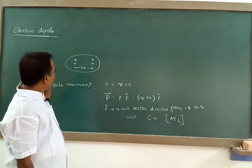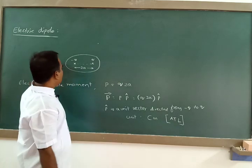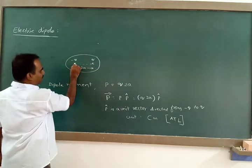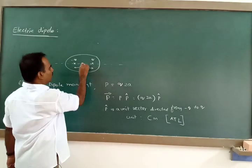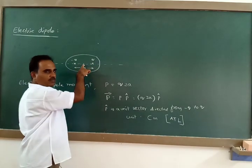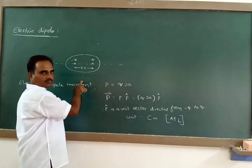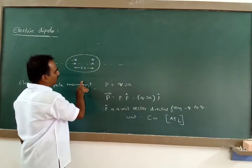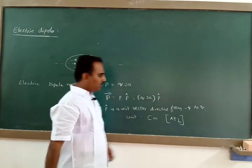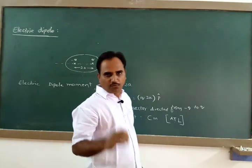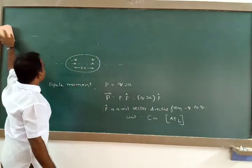We can find the electric intensity due to a dipole first on an axis. A line passing through the two charges is called the axis of the dipole. The midpoint of the two charges is called the center of the dipole. A line passing through the center and perpendicular to the axis is called the equatorial line. We shall find electric intensity on the axis and then on the equatorial line. These derivations are very important for the examination — you will find this question many times in old question papers.